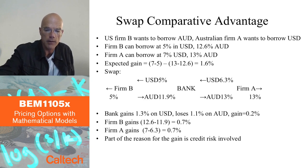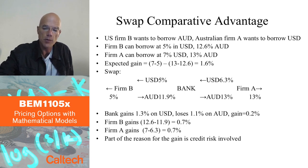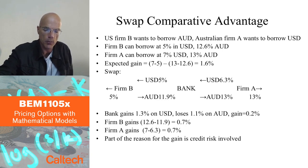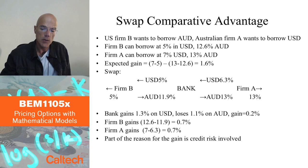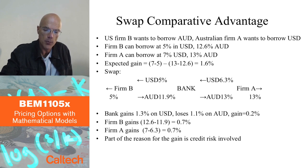Firm A has to pay higher interest in both markets, which is realistic if it has a lower credit rating than firm B. The claim is that there exists a swap such that these firms could share a potential expected gain of (7% − 5%) − (13% − 12.6%) = 2% − 0.4% = 1.6%. Let's see whether we can construct a swap in which a profit of 1.6% can be made.